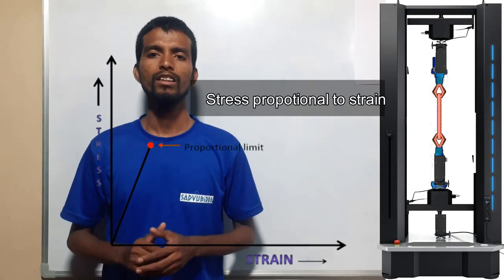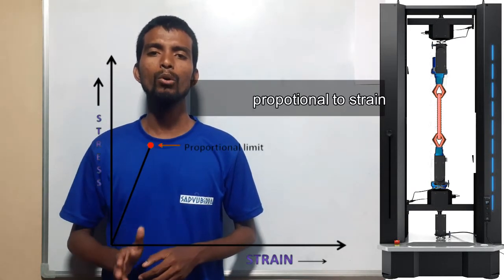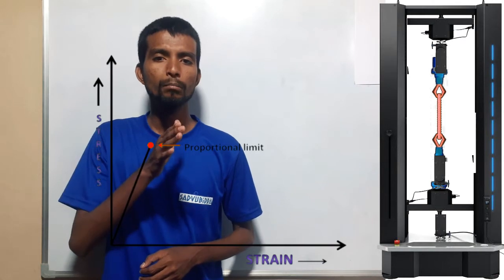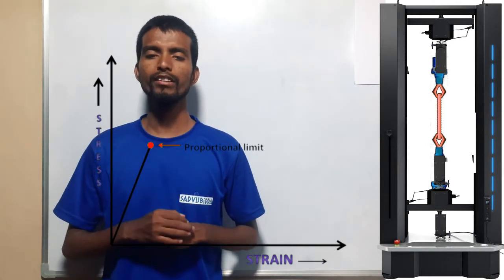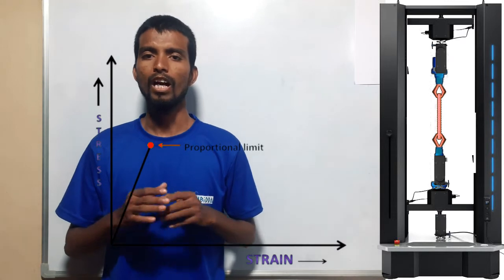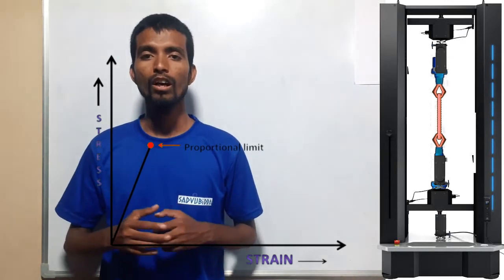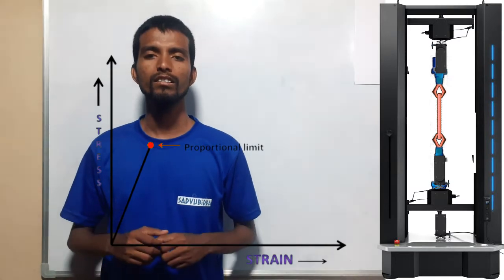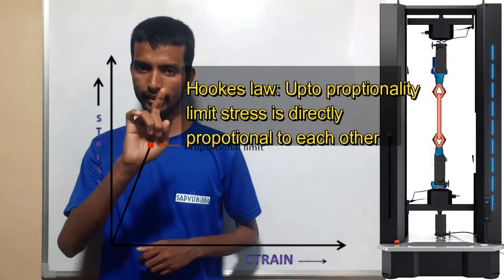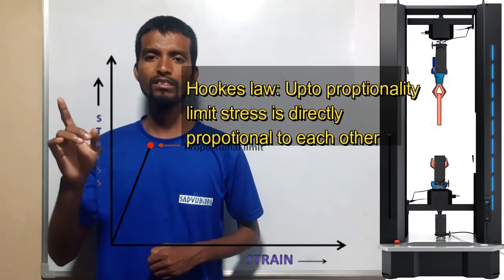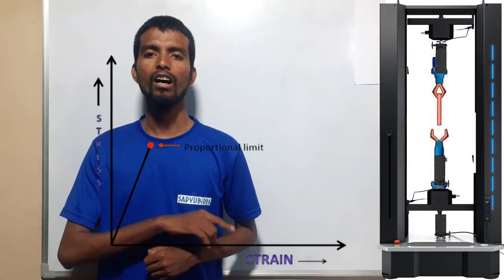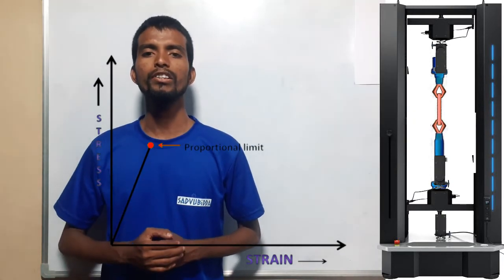Up to a certain point, stress and strain are both linearly proportional. This point is known as the proportionality limit. Up to this limit, Hooke's law is obeyed. Hooke's law states that up to the proportionality limit, stress and strain are directly proportional to each other.